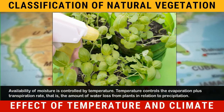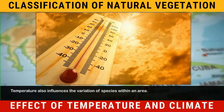Availability of moisture is controlled by temperature. Temperature controls the evaporation plus transpiration rate, that is, the amount of water loss from plants in relation to precipitation. Temperature also influences the variation of species within an area.